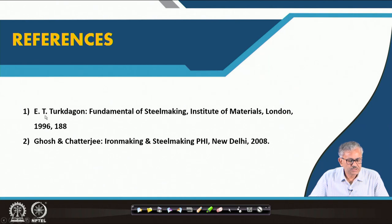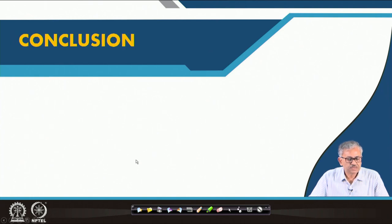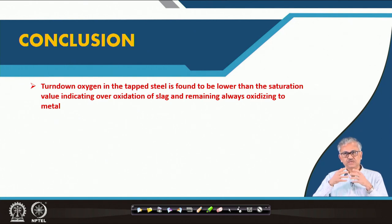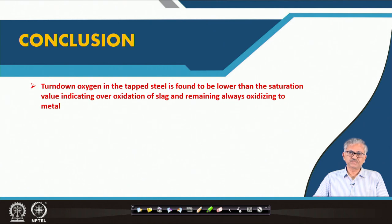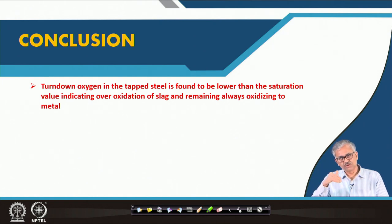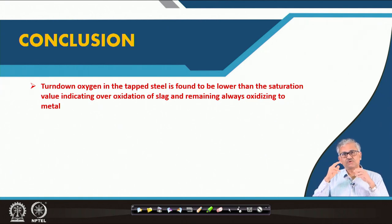In conclusion: the turndown oxygen in tapped steel from LD is found to be lower than the thermodynamic saturation value (~1165 ppm at 1600°C vs. 800–1000 ppm observed). This indicates over-oxidation of the slag — the oxygen produced at the interface cannot penetrate the bath as fast as it is generated. The accumulated oxygen oxidizes FeO to Fe₂O₃, keeping the slag over-oxidized and always oxidizing to the metal.